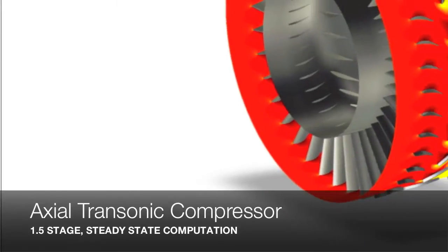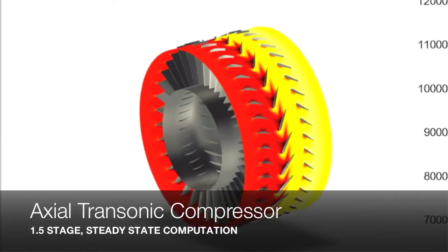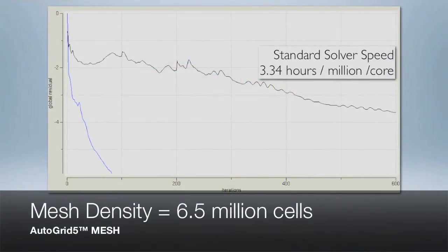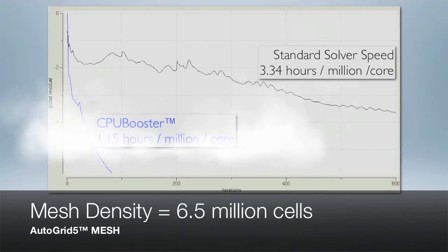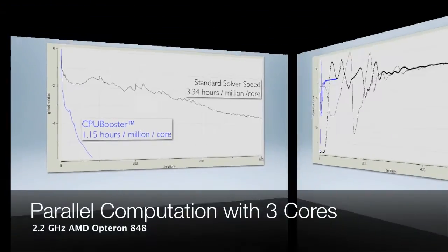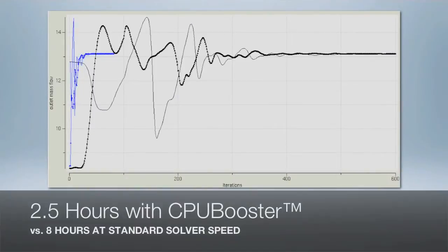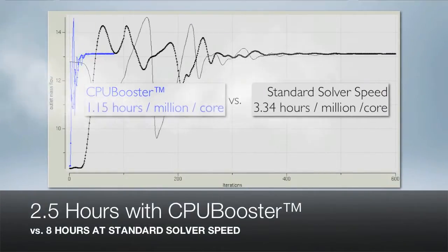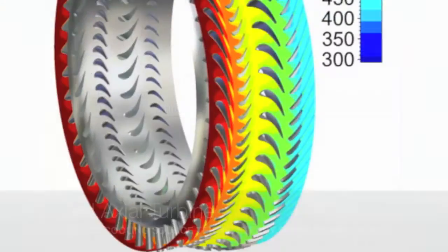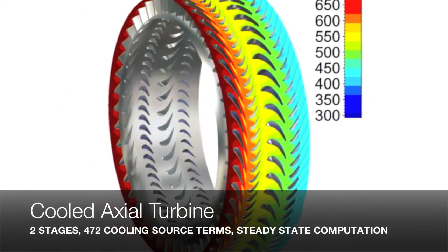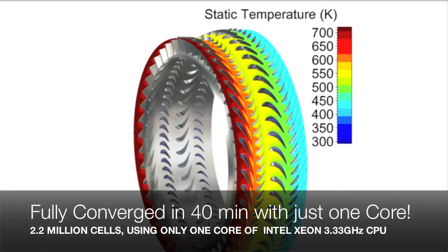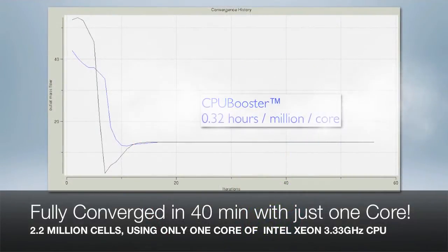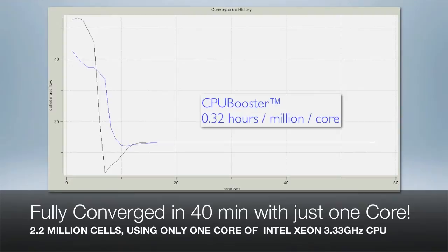This 1.5-stage transonic compressor is a perfect example of the benefits of CPU booster. With a mesh size of 6.5 million cells distributed on three processes, at standard solver speed, convergence is reached after nearly eight hours. With CPU booster, convergence is reached in only two and a half hours. An additional example is a cooled two-stage axial turbine: with a grid size of 2.2 million cells, this model may be solved in only 40 minutes in serial mode with CPU booster.